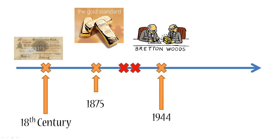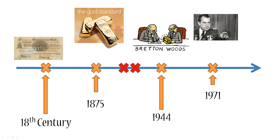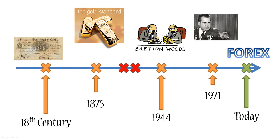As you might expect, when you create something that is basically the gold standard version 2.0, there's a high likelihood of it failing just as the gold standard did — and that's exactly what happened. Over the years after World War II, US gold reserves started depleting very rapidly, and in 1971 US President Richard Nixon closed the gold window by telling all other countries that the US would no longer exchange gold for US dollars held in foreign reserves. This event marked the end of the Bretton Woods agreement, and since then the world has been using floating exchange rates between currencies — what we now know as the forex market.